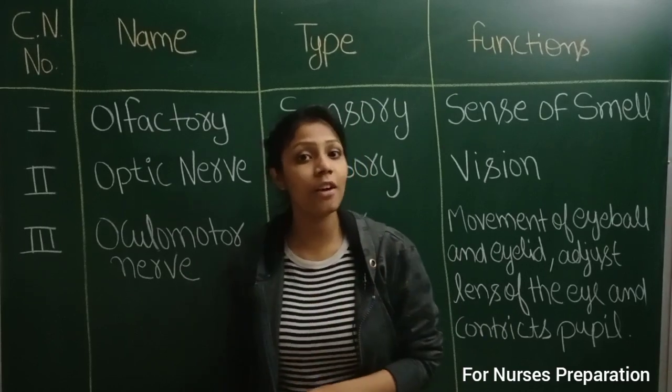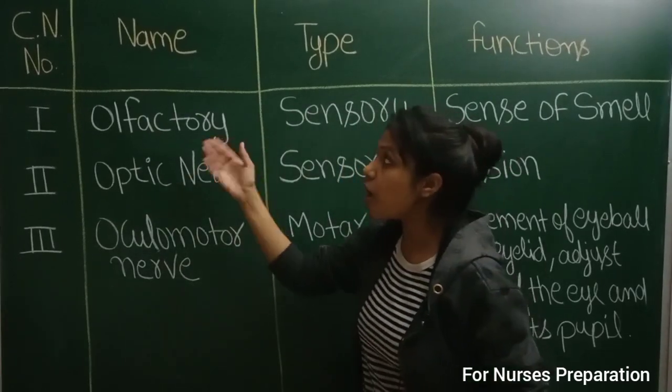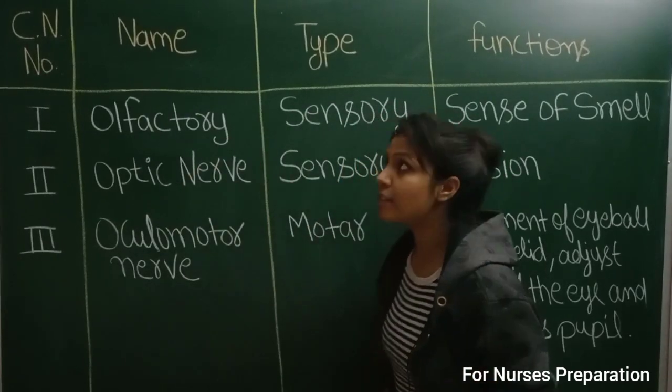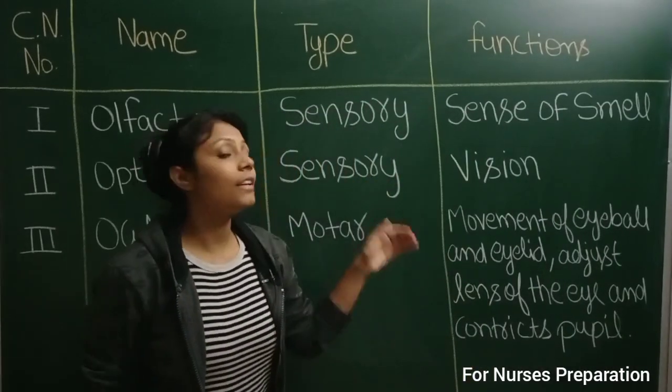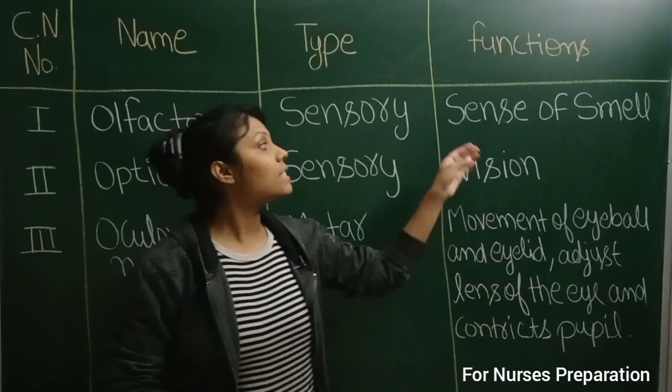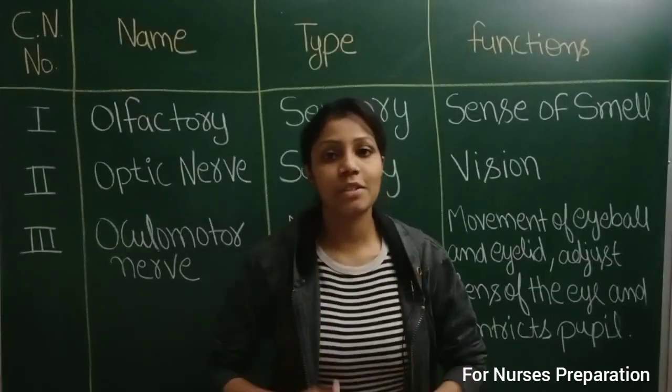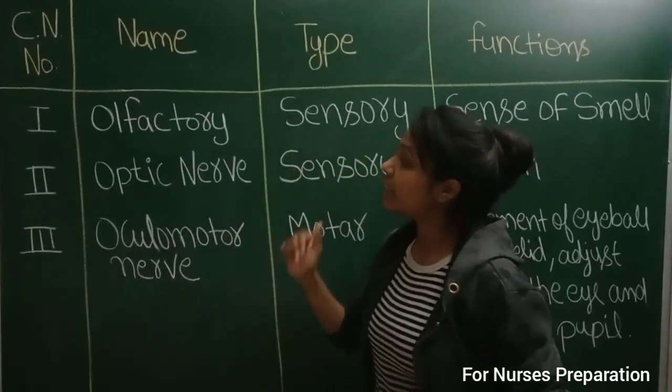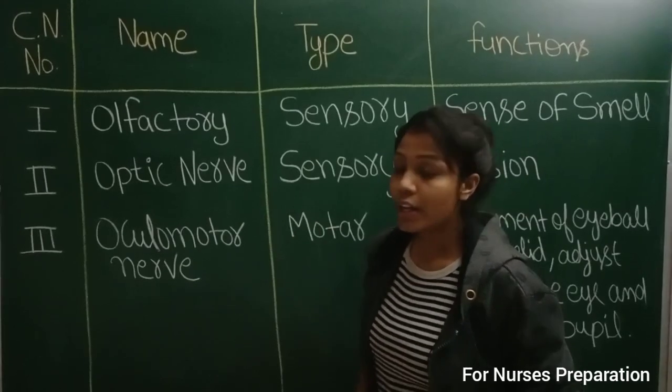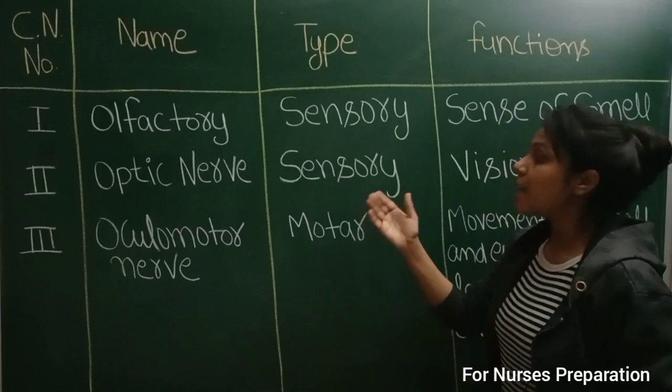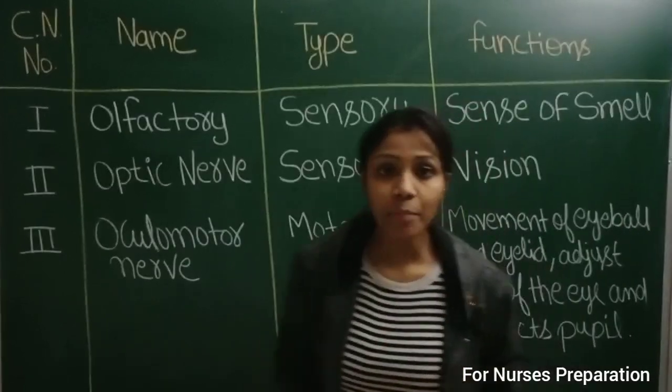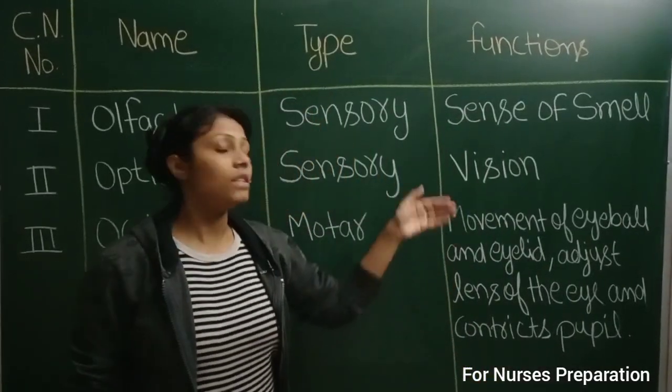So our first nerve name is olfactory. It is a type of sensory nerve and its function is sense of smell. And next, that is second type of nerve is called optic nerve and it is sensory in this type and their function is vision.